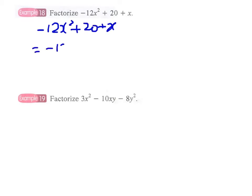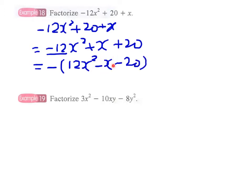Therefore, we move this x term in the middle and we have -12 as the coefficient of x². We take out the -1 here. We have minus bracket 12x² - x - 20. Remember, we have to change signs here because we've taken out -1 as the common factor.